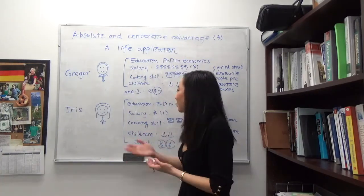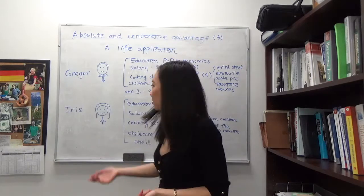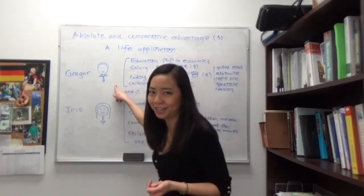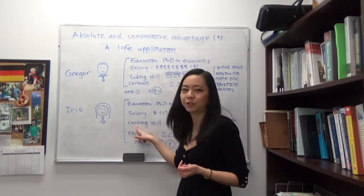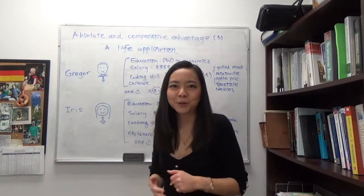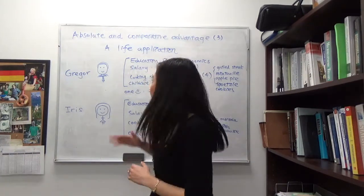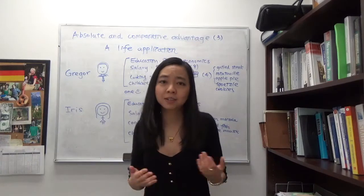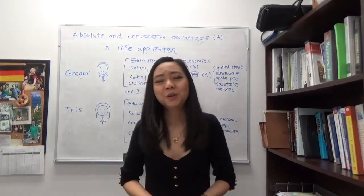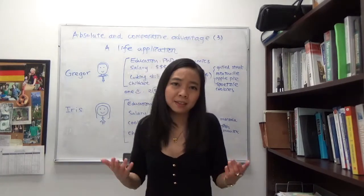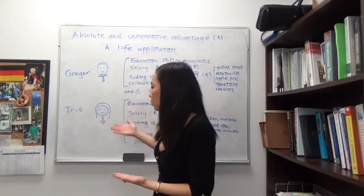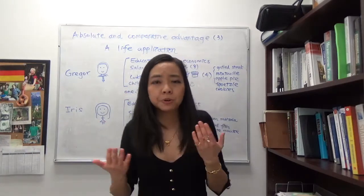As your intuition suggests, Gregor will be focusing on bringing home a paycheck, and Iris will take care of the cooking and childcare. You can see how we're using the concept of absolute and comparative advantage every day without even knowing it or thinking about it. That's also true for our daily life.